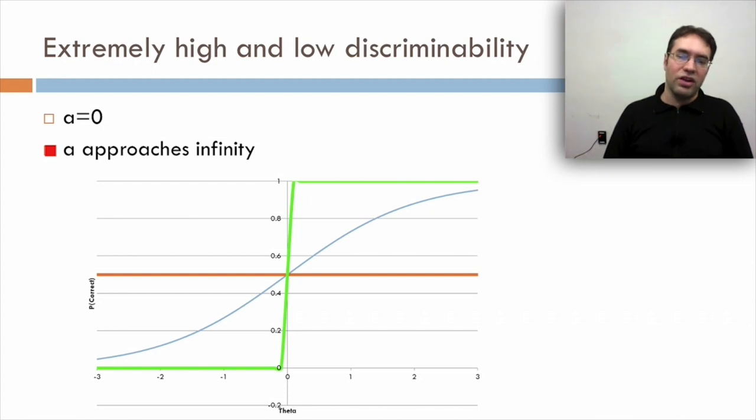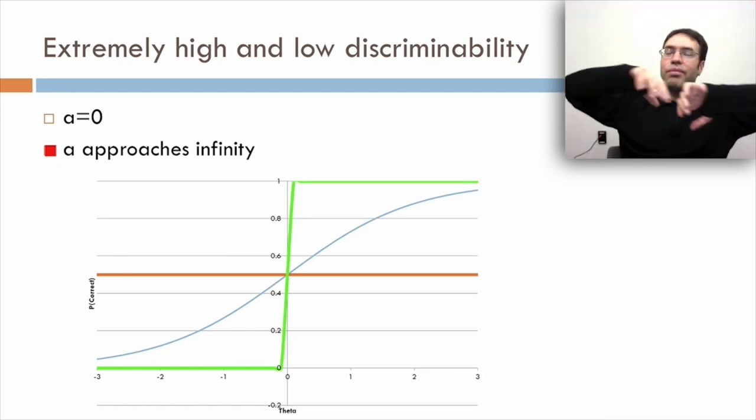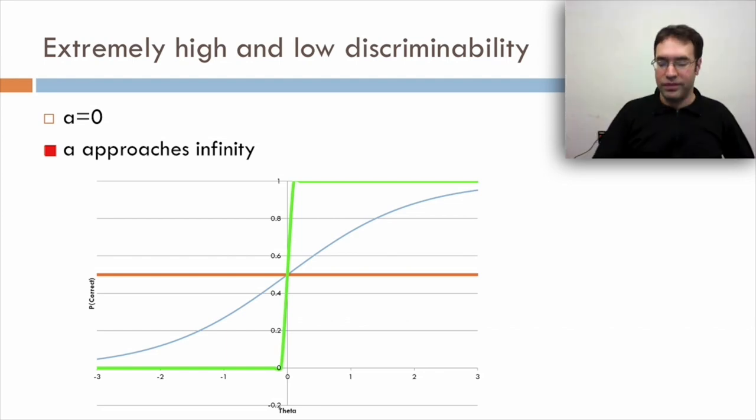And as a approaches infinity, you get something looking more like the green line where there's just this very small range between getting it wrong and getting it right. So even though this is very discriminable, it actually may not be useful because it's only going to tell you the difference between students with theta of about negative 0.1 and students with theta of positive 0.1. Anything below or above that range is just going to be completely certain to get it right or wrong.